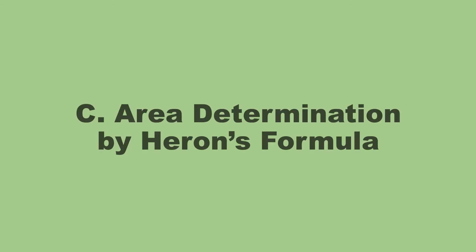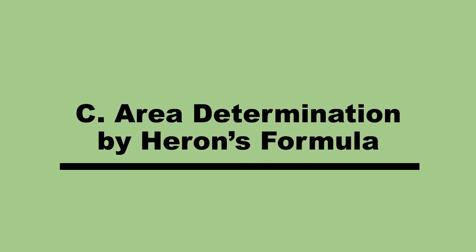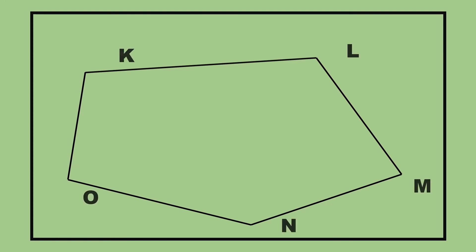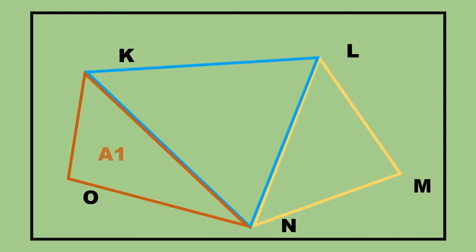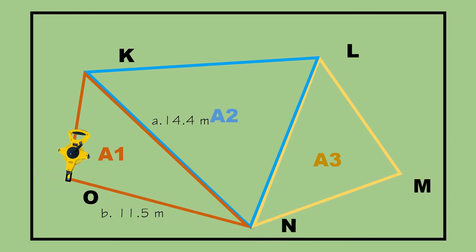Part C: Area Determination by Heron's Formula. Step 1: The same field described in Part A, Area Determination by Base and Altitude, will be used for this method, but change the designation on the corners. Step 2: Divide the polygon into three triangles: A1, A2, and A3. Step 3: Measure all the sides of the first triangle chosen. For example, Side A is 14.4 meters, B is 11.5 meters, and C is 7.15 meters. Record these measurements on Table 3.3, Area Determination by Heron's Formula.